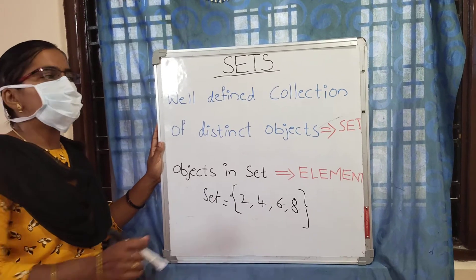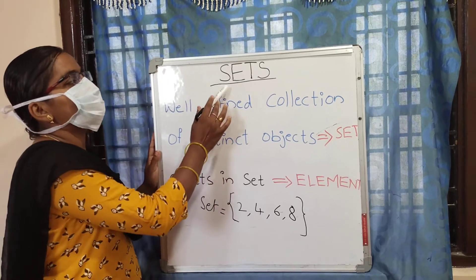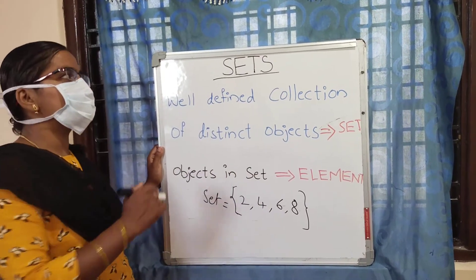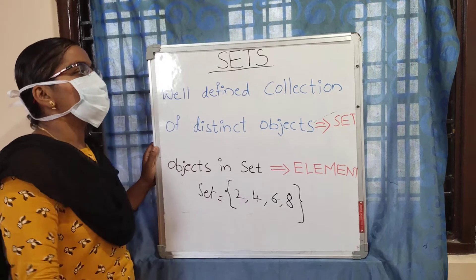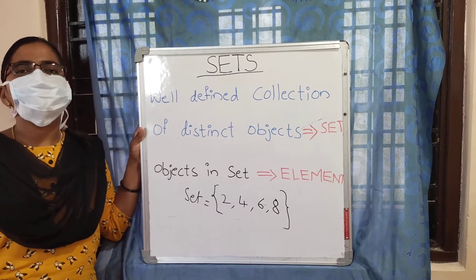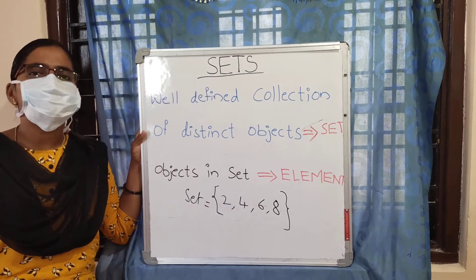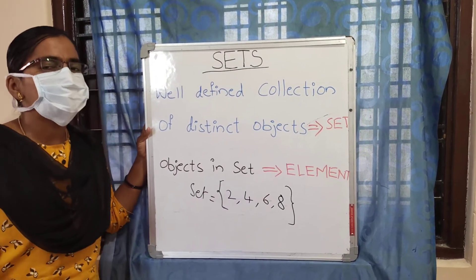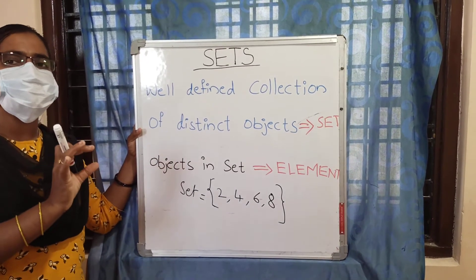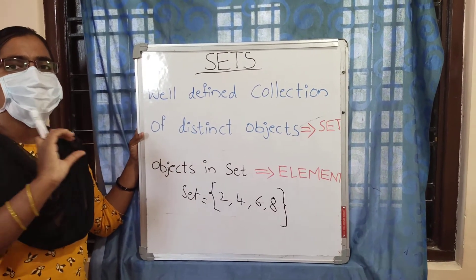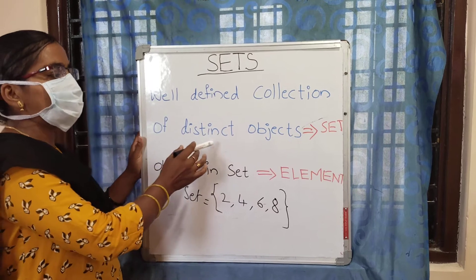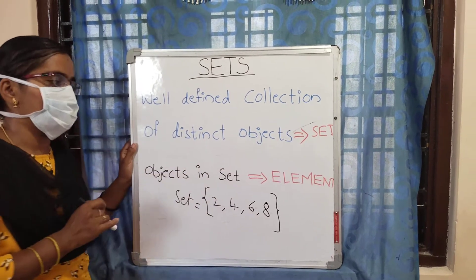Hi everyone, today's topic is sets. This is the last topic in the number system. A well-defined collection of distinct objects is called a set. Different objects that have a relationship with each other, when formed into a group, is called a set.